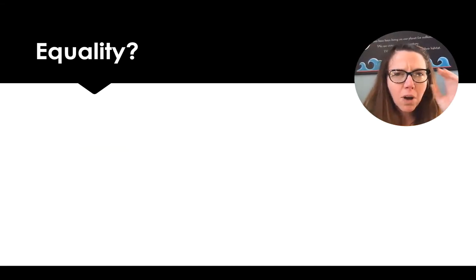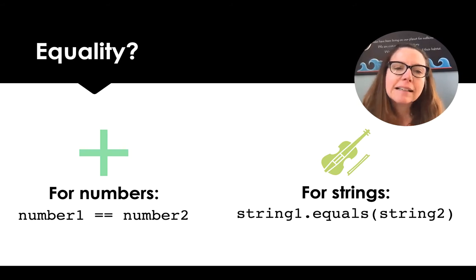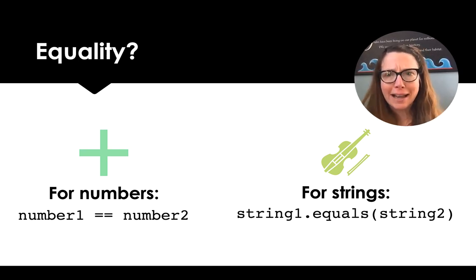So what about equality? Equality seems fairly straightforward, right? We know that for numbers we can check if two numbers are equal by using that double equal sign. And that's true. But there's a different form of checking for equality in strings. And that's because when we use the equals equal sign with strings, it's actually checking that the location of two strings is the same. And that's not what we're asking.